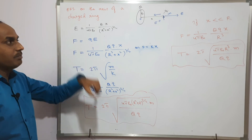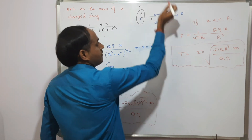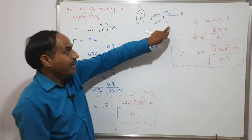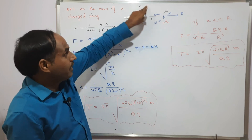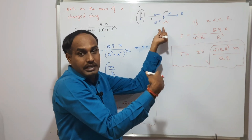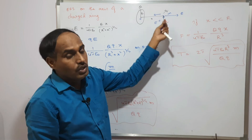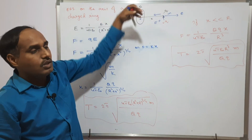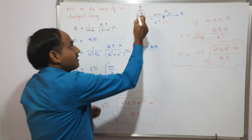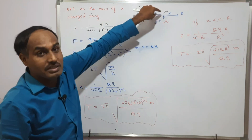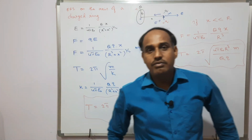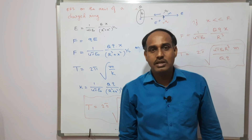One more point: if we place a positive charge on the axis, does it oscillate? No — because a positive charge experiences force in the direction of the electric field, which is directed away from the center, so it moves away and never returns. These oscillation expressions apply only when a negatively charged particle is placed on the axis of a positively charged ring. Thank you for watching — please like, share, comment, and subscribe for more videos.